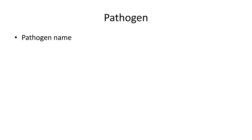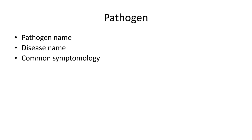With the pathogen name you will come up with the name of the disease — what is that particular disease called. This is not a long drawn out sort of thing; it's kind of a simple part. Then you're going to come up with the common symptomology — what are the common symptoms? None of these pathogen reports should go on very long; a couple of minutes should be plenty. If there are things with very complex symptomology, try and break it down to the more common things.